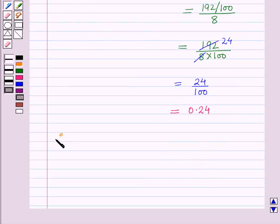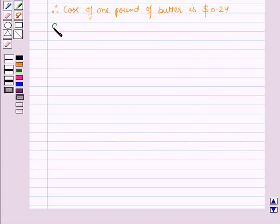Therefore, the cost of 1 pound of butter is 0.24 dollars. Now suppose Peter purchased x pounds of butter.